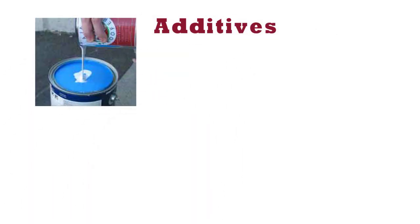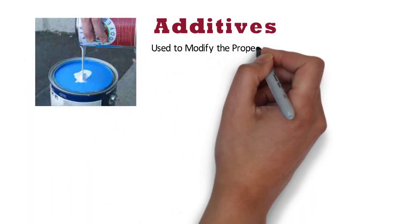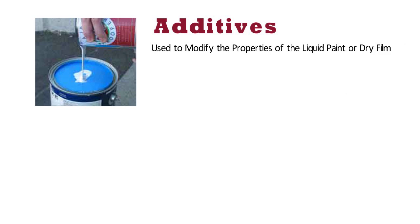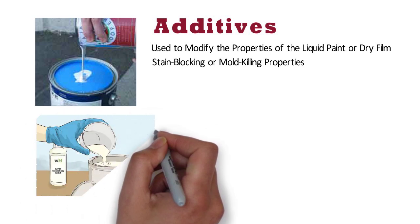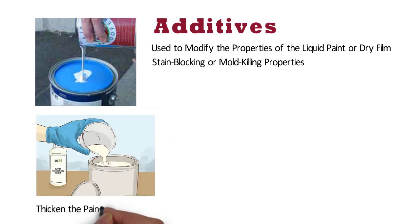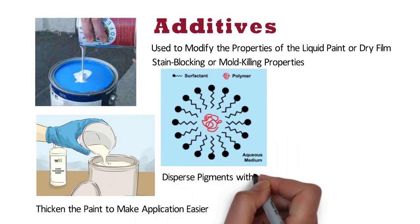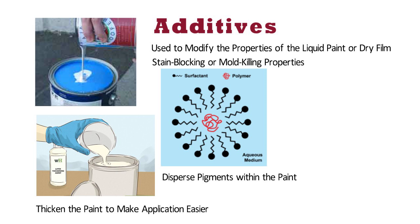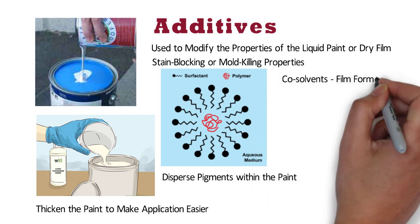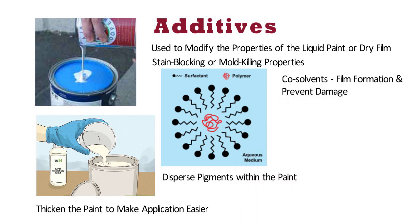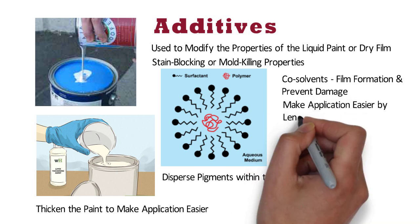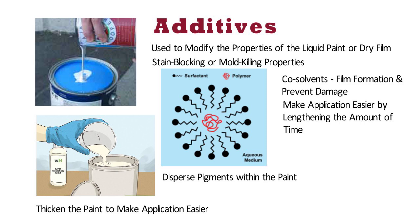The sixth component is additives. They are used to modify the properties of the liquid paint or dry film. Additives provide specific performance characteristics such as stain blocking or mold killing properties. For example, thickeners are additives that help thicken the paint to make application easier. Surfactants help disperse pigments within the paint, ensuring the coat is even and stays in place. Co-solvents help film formation and help prevent damage if the paint is frozen. Co-solvents also make application easier by lengthening the amount of time the paint can be open before beginning to set.